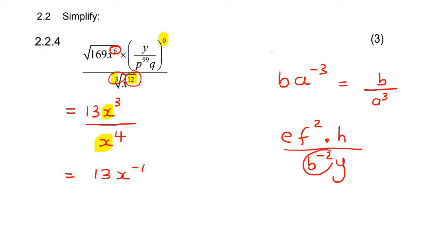Well, if it's negative there, then to get rid of the negative, you take it to the top. So to get rid of the negative, you just take it to the other place. So if it was at the top, you put it at the bottom. If it was at the bottom, you put it at the top.